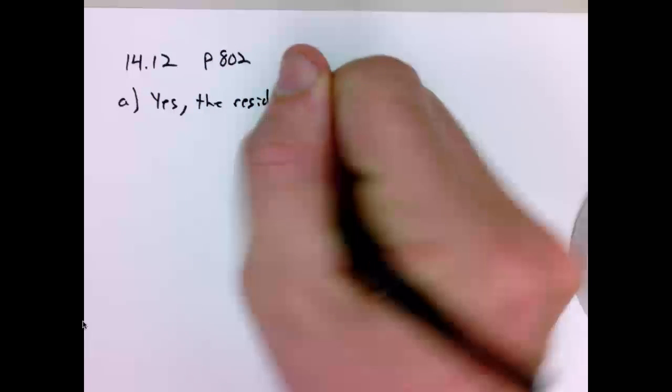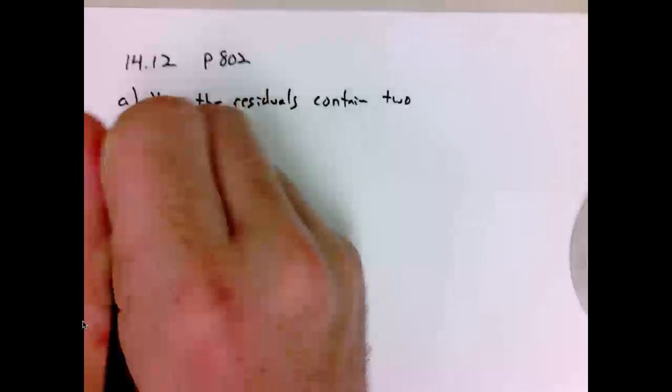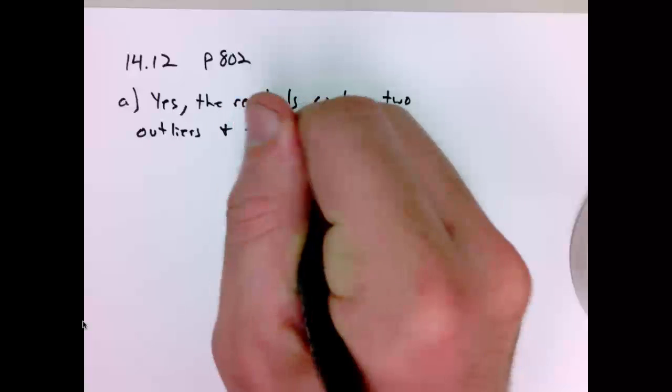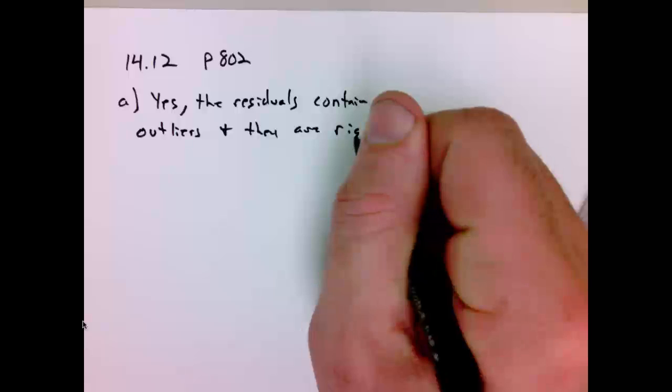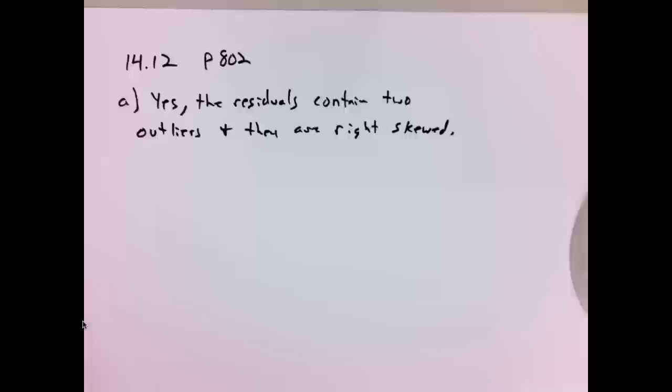14.12a. Are there outliers or signs of strong departure from normality? Let's see. Yes. The residuals contain two outliers and they are right skewed. That is, the residuals are right skewed. Okay. That's A part.